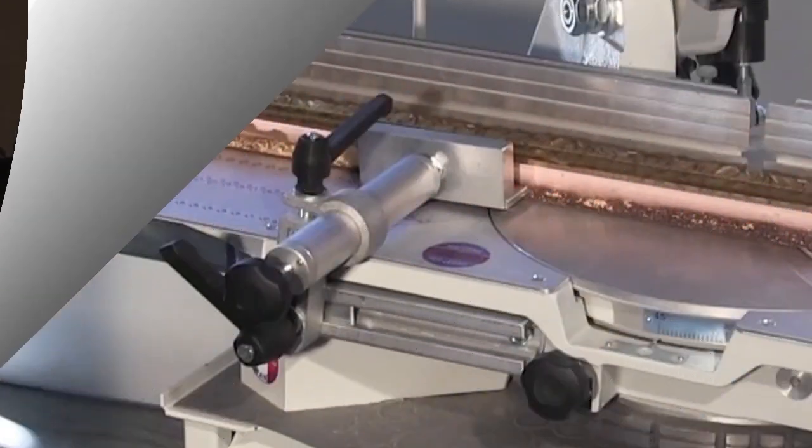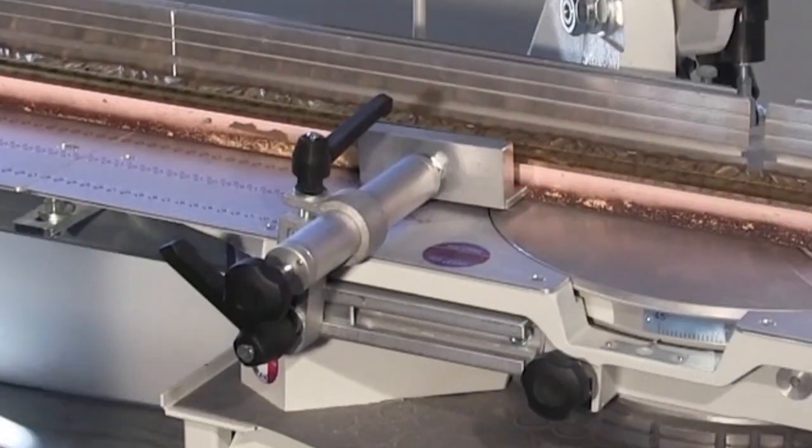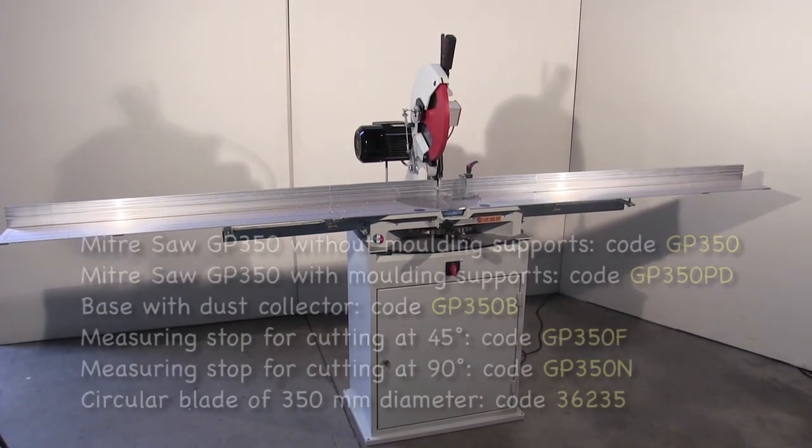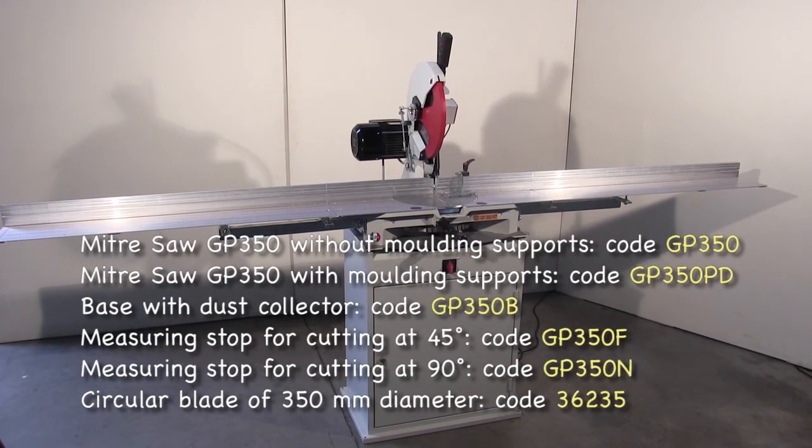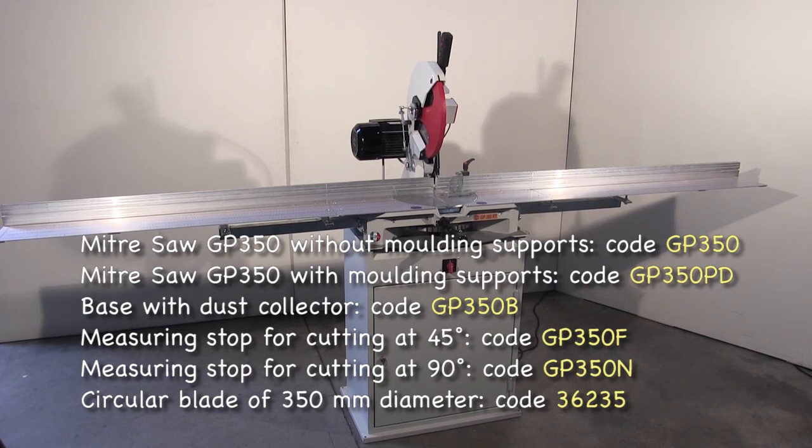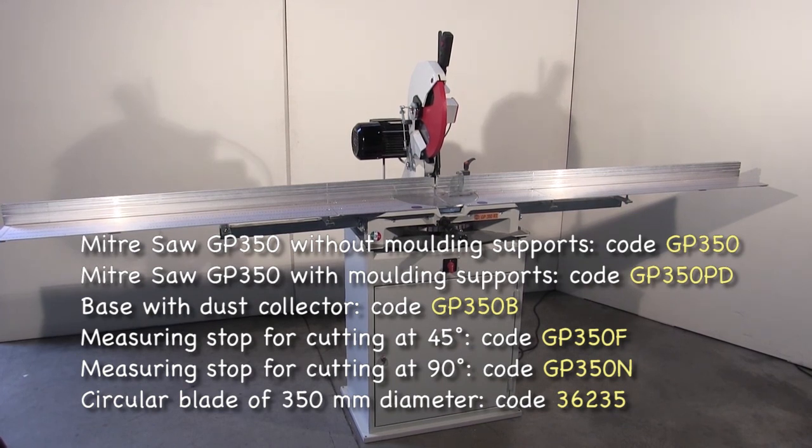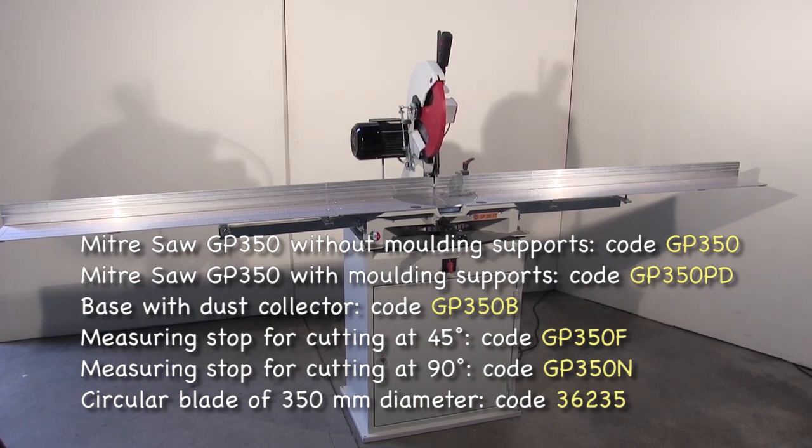You can apply a locking clamp to the saw. The clamps are illustrated in a separate video. These are the codes of the saw elements. You will find the GP350 saw and all accessories in the Rinaldin catalog and on the website www.rinaldin.com